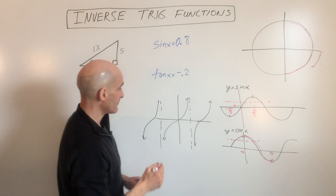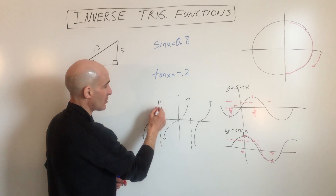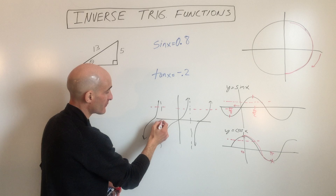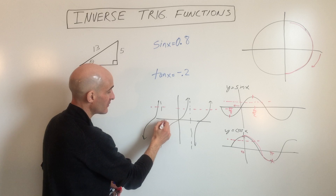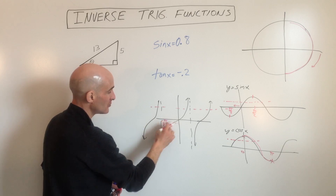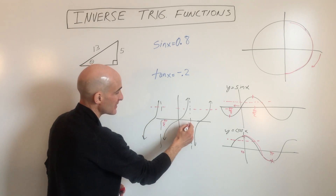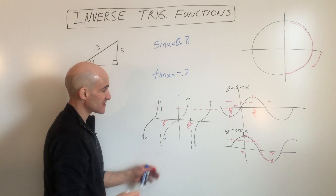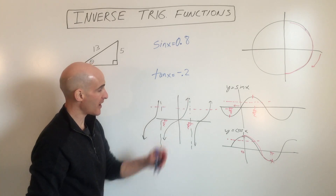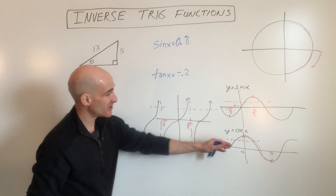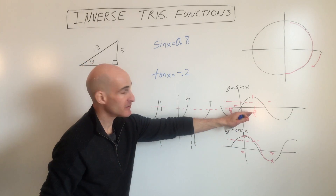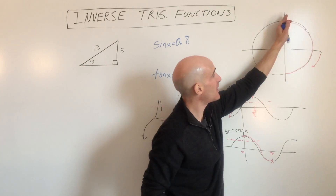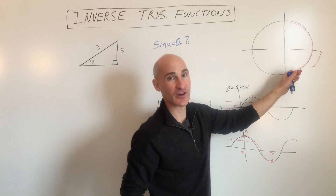And for tangent, again, tangent also fails the horizontal line test. But if we just look at from negative pi over 2 to positive pi over 2 — just this one branch of the graph — if we restrict it from negative pi over 2 to positive pi over 2, then it's a function.